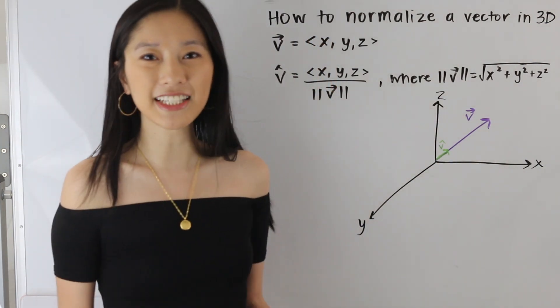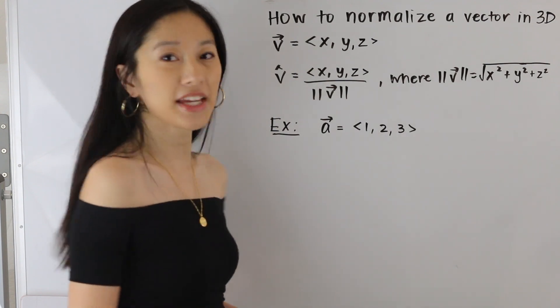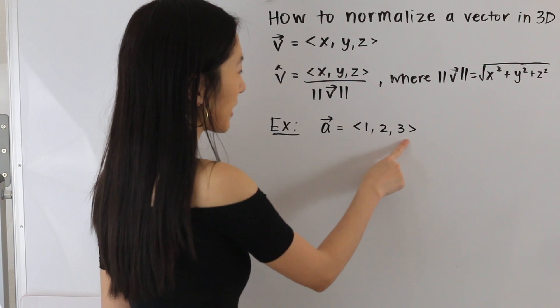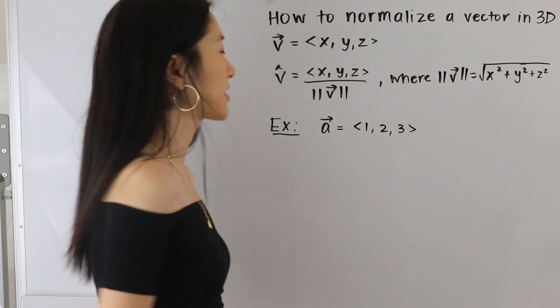And so let's go ahead and take a look at some examples. So in this example here we have a vector a, and its components are 1, 2, and 3. So let's start off by finding its magnitude.